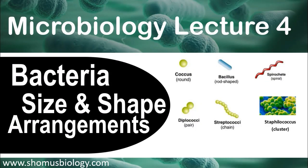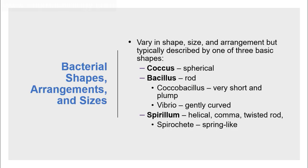Hello friends, welcome to the fourth microbiology lecture. In this lecture we want to talk about bacterial size, shape, and arrangements, because bacteria are found on Earth in different sizes, shapes, and arrangements — like round or spherical, or sticking together. We want to talk about all these different things, what they mean, and why bacteria are present in different sizes and shapes.